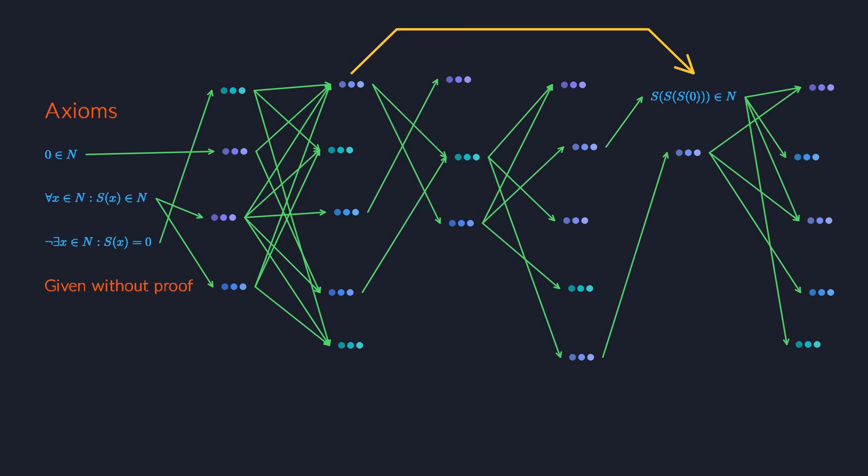Whenever we prove one sentence from another, we write it with this turnstile, a letter T turned on its side. So, this turnstile symbol indicates that you were able to find a path from the first sentence to the second by blindly applying the purely structural, syntactic rules of logic, ignoring the meaning of anything that happens along the way.